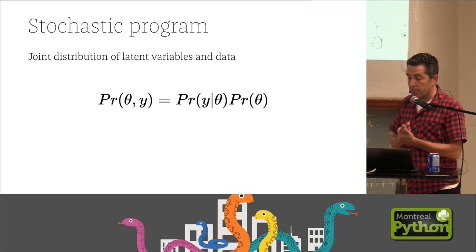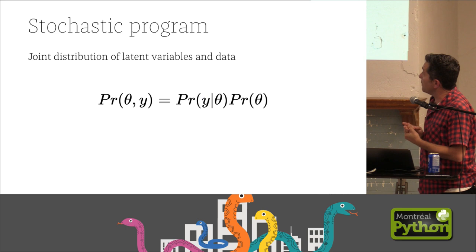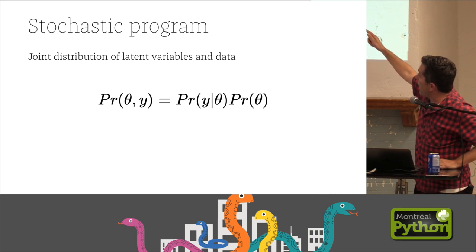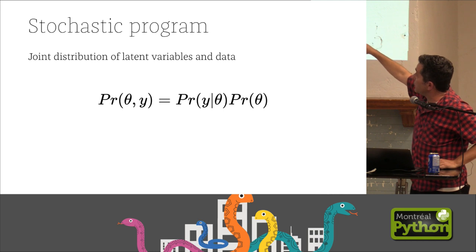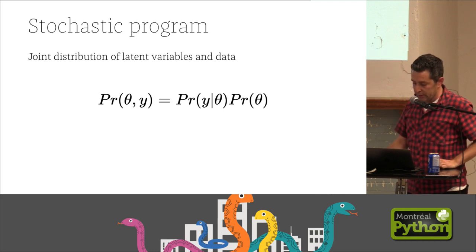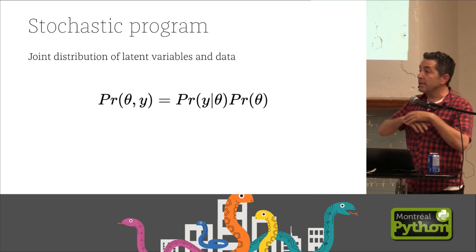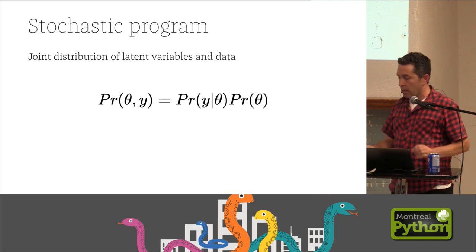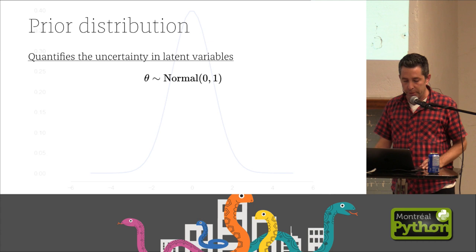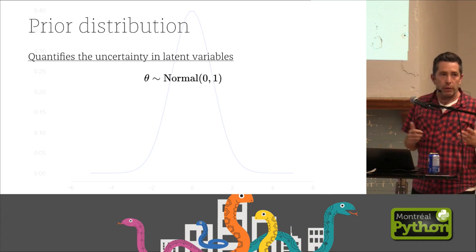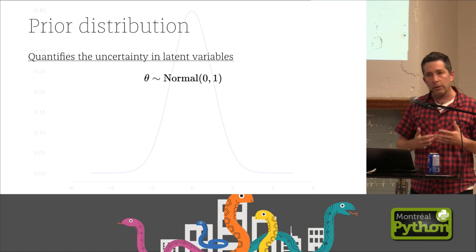The stochastic program, then, is where the probabilistic programming comes into play. We're able to specify priors and likelihoods and come up with some joint distribution of everything in our data. So the first step in doing Bayesian inference is to write down your model in whichever language you're going to be using.